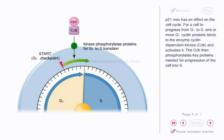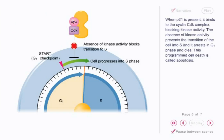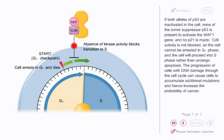The CDK then phosphorylates key proteins needed for progression of the cell into S phase. When p21 is present, it binds to the cyclin-CDK complex, blocking kinase activity. The absence of kinase activity prevents the transition of the cell into S phase, and it arrests in G1 phase and dies. This programmed cell death is called apoptosis.